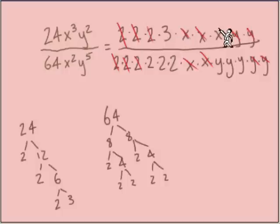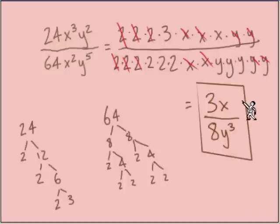With these factors that are left over, those are what we're putting into our answer. From the numerator, we're seeing a 3 and an x, so 3x in the numerator. For the denominator, 2 times 2 times 2, that's 8, and y times y times y, y to the third power. Our 3x were the leftovers from the numerator. There's our simplified rational expression, 3x over 8y to the third.